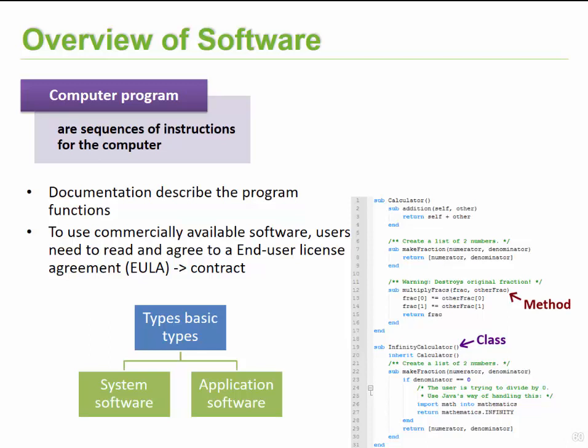On the right-hand side there is a small subset of a program showing a set of instructions. Whatever appears in green are comments made in order to allow other people who may need to come and change that particular application to know what was done and to enable them to make the required changes.